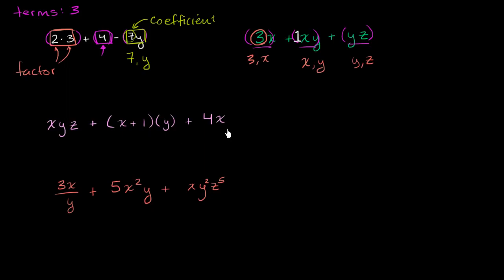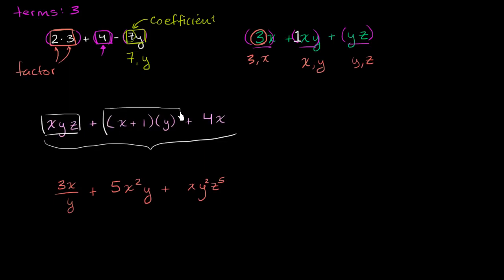Now this next one is really interesting. If we look at the whole expression, it's clearly made up of three terms. The first term is xyz. The second term is the quantity (x + 1) times y. And the third term is 4x. Looking at the first term, you'd say it has three factors: x, y, and z. The second term has two factors: one factor is (x + 1), and the other factor is y — so the smaller expression (x + 1) is itself one of the factors.